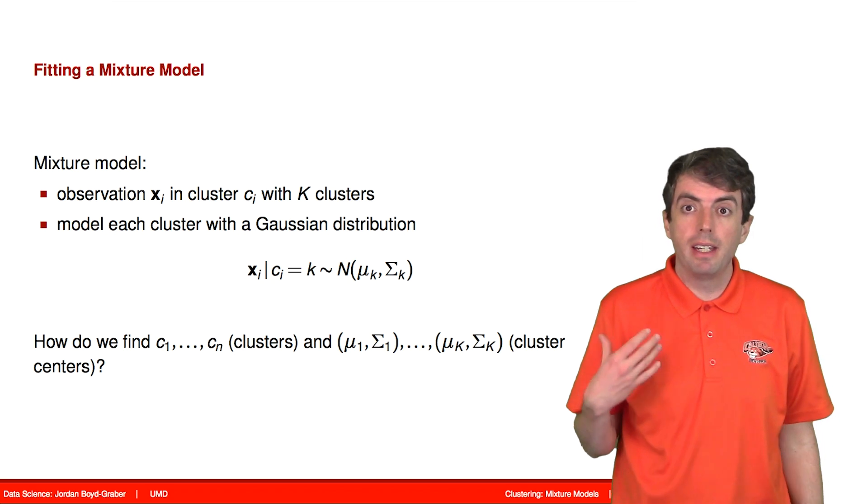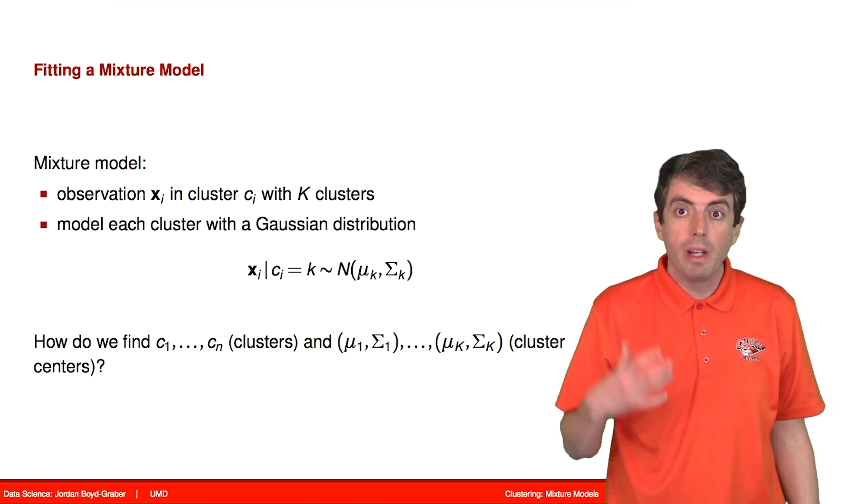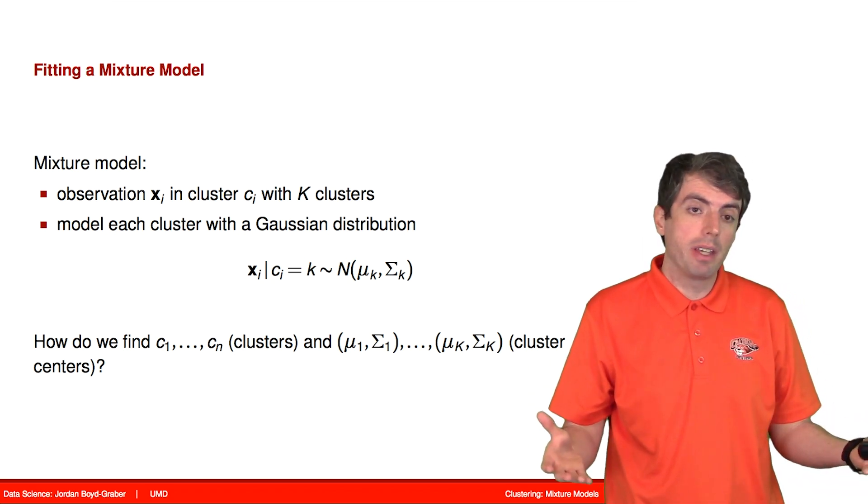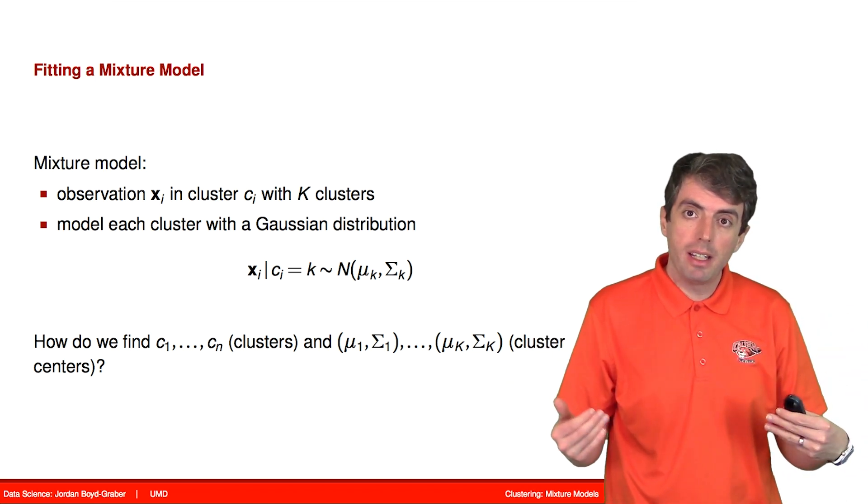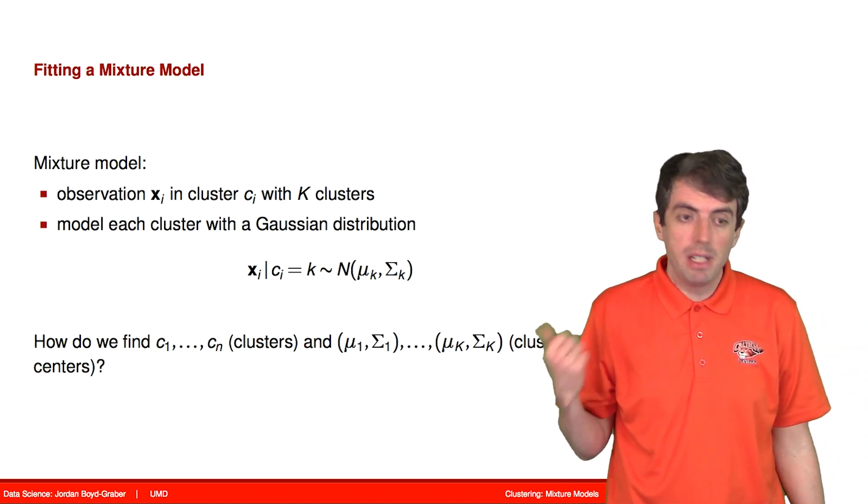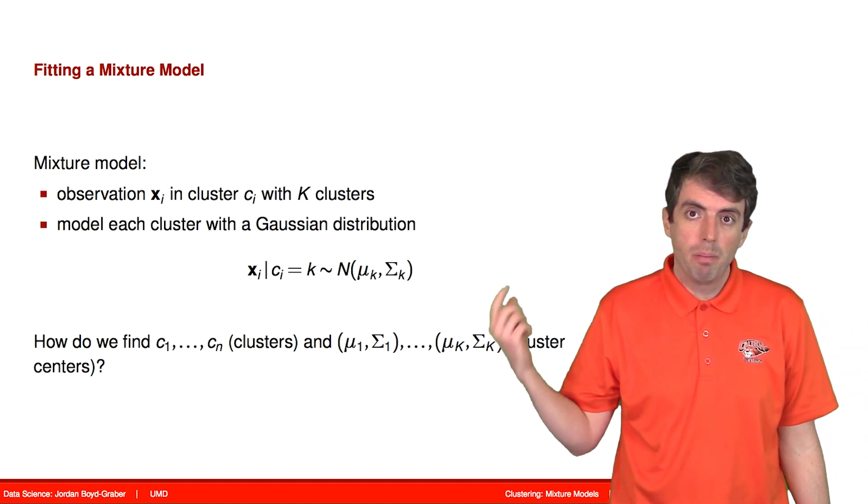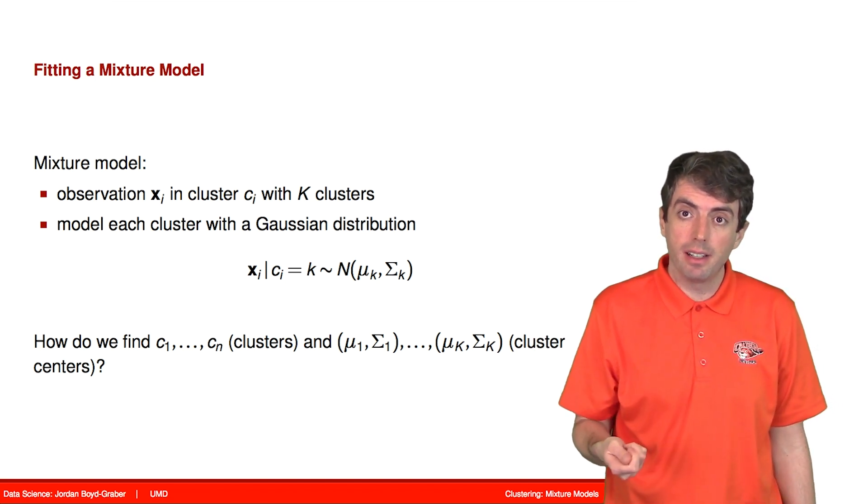When we model our data with a Gaussian mixture model, we have our data just as we had with k-means, and we're going to model each cluster with a mean and a variance. But how do we figure out what those means and variances are?